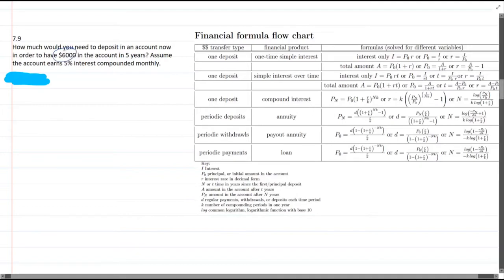That means our final amount, which is PN, is $6,000. P0 is unknown, and that's what we're trying to find. P0 is the principal or initial amount, so we don't know how much we're starting with.